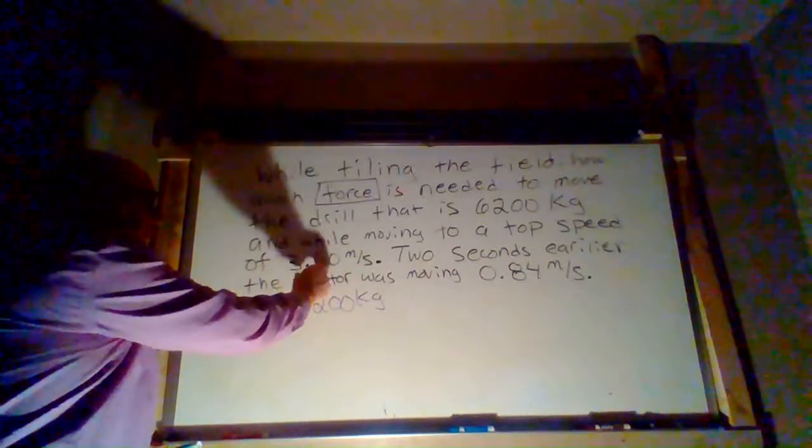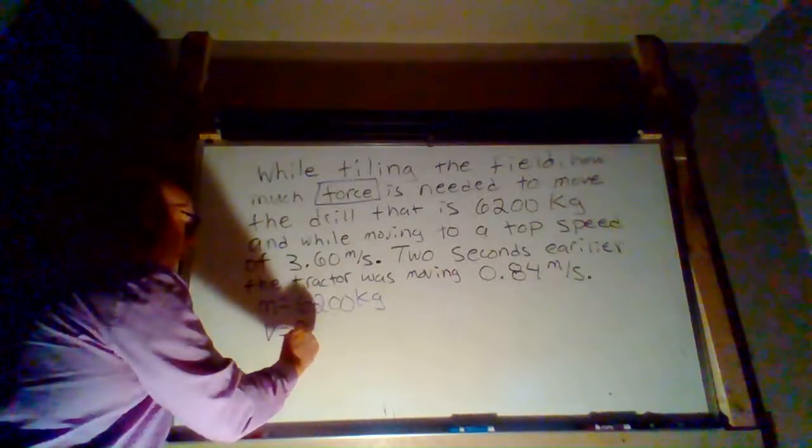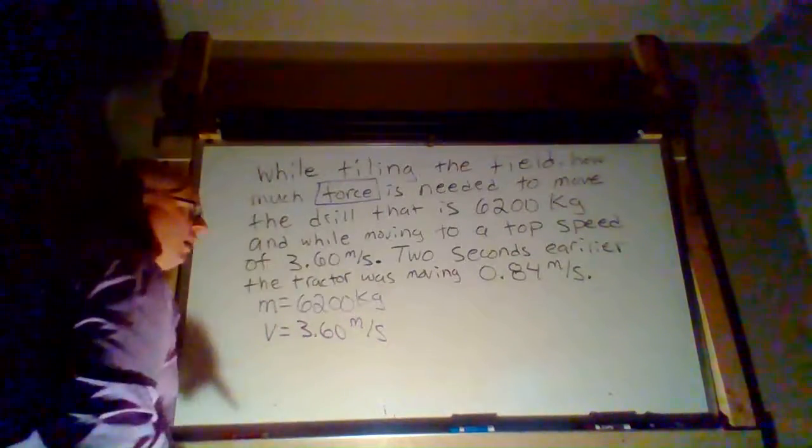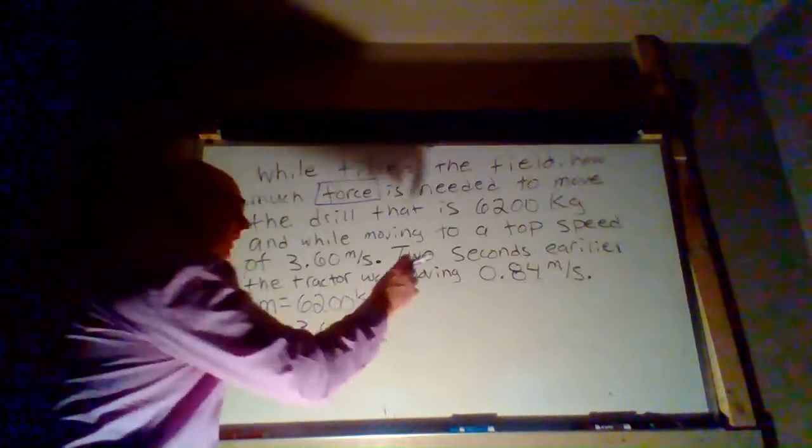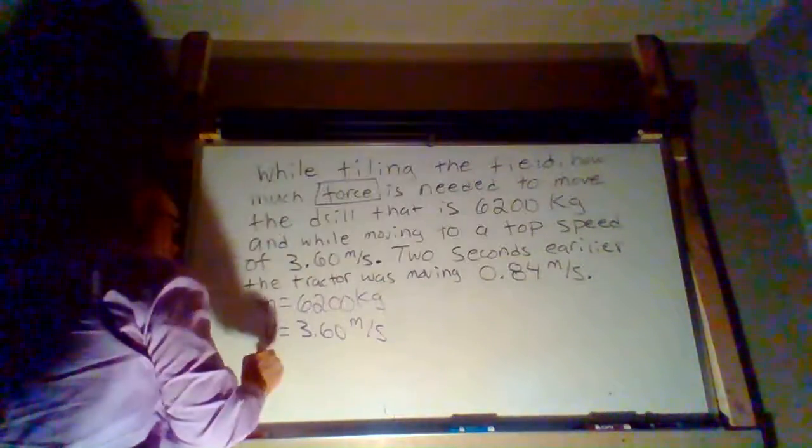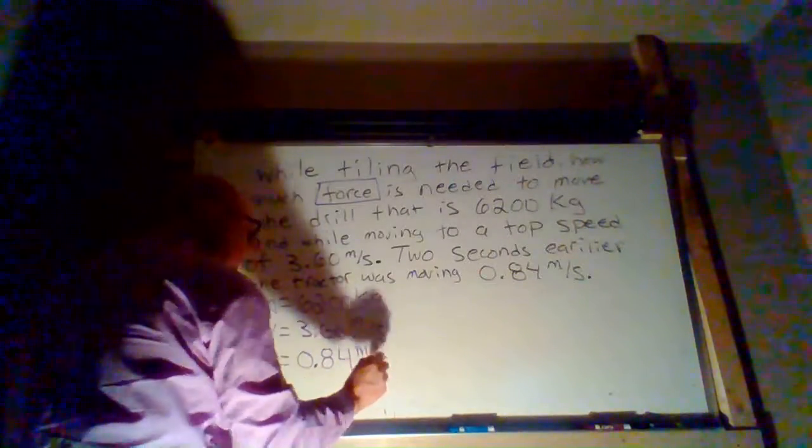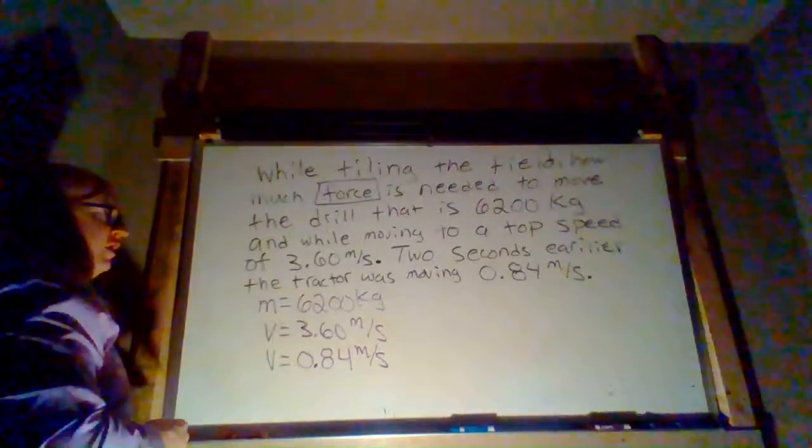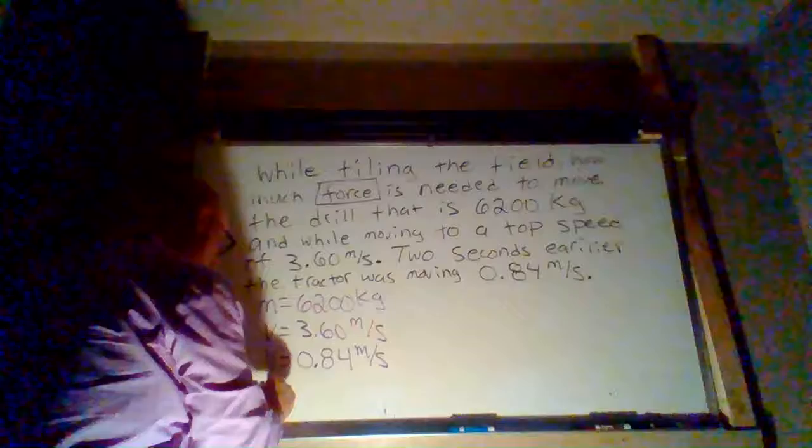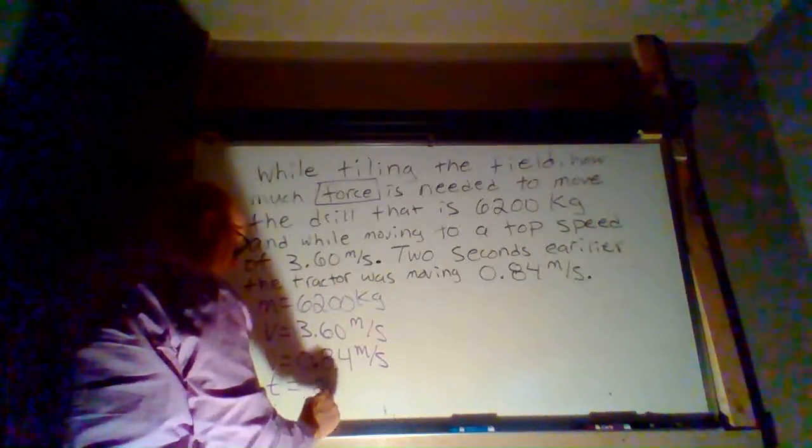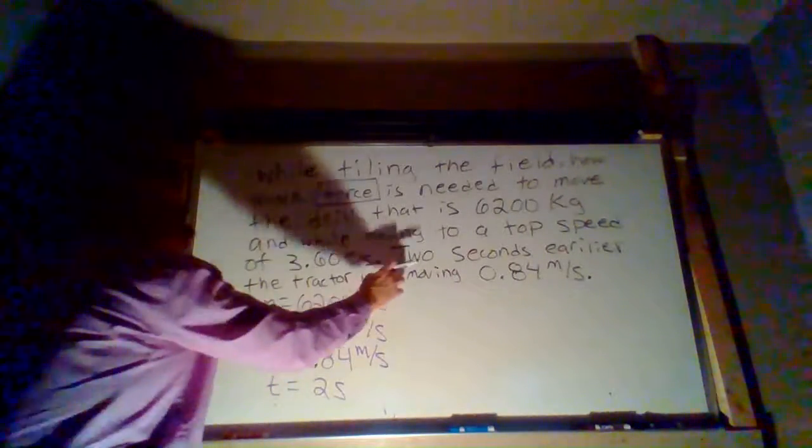So the velocity we know. 3.60 meters per second, and the clue here is it says two seconds earlier. We know it's a speed or velocity because it's labeled meters per second, and we also got this time here of two seconds. The last thing we need to do is check out what these are actually meaning.